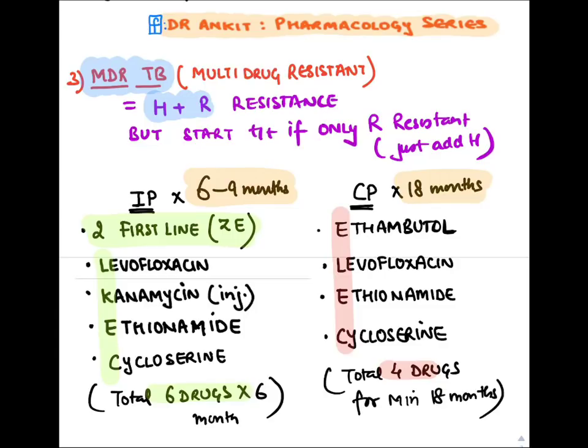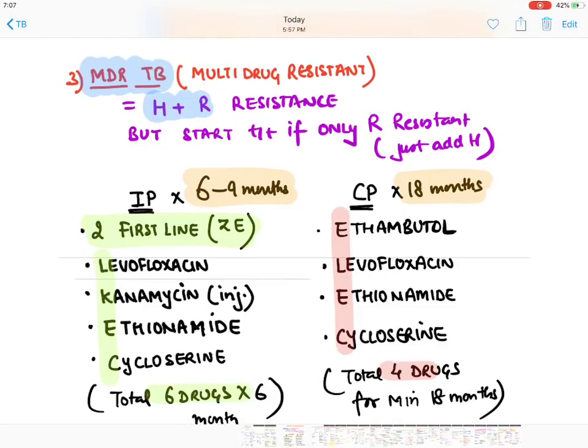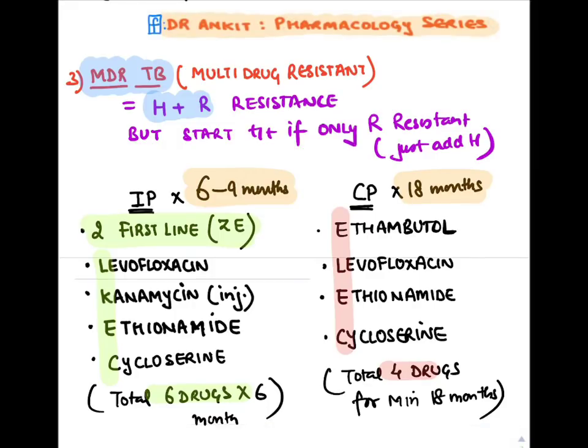In the continuation phase, we give the drugs for 18 months. We remove kanamycin (injectable) and pyrazinamide (most toxic). So we give ELEC — ethambutol, levofloxacin, ethionamide, and cycloserine — 4 drugs for 18 months minimum. This is the treatment of multidrug resistance.